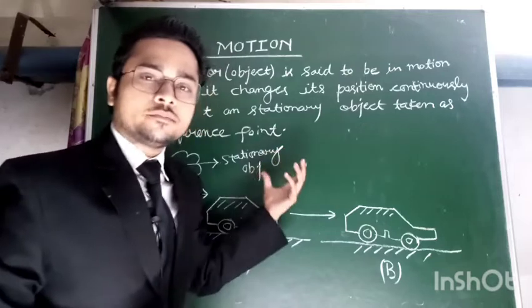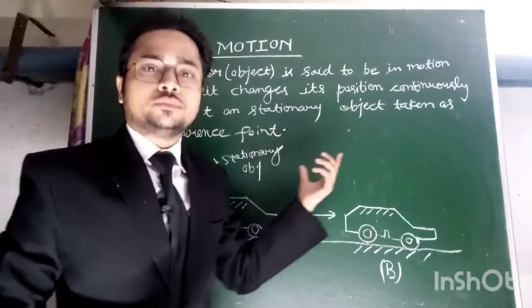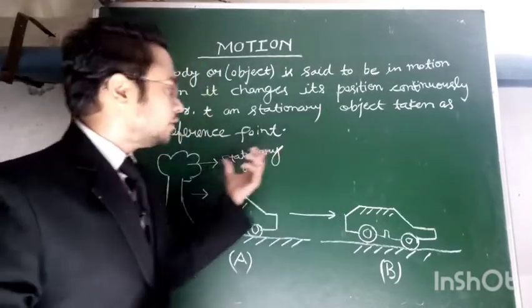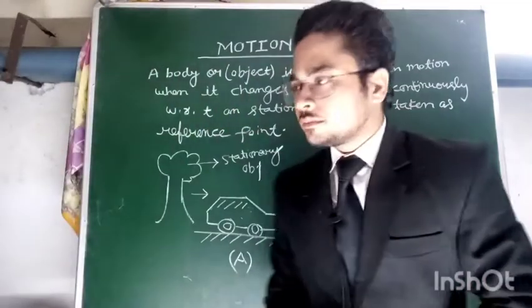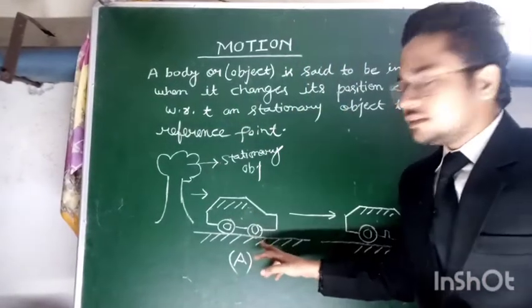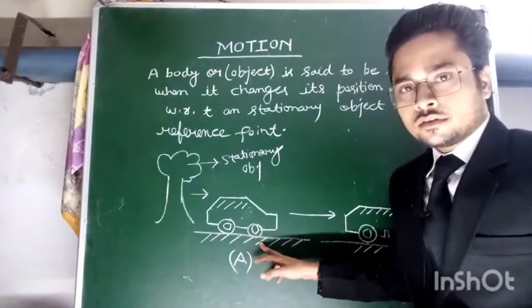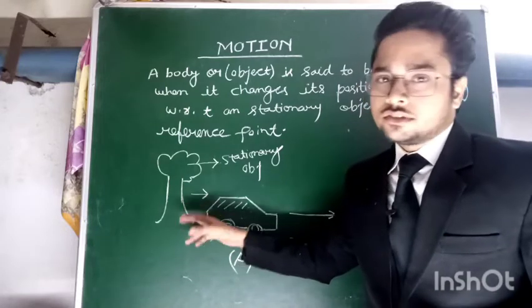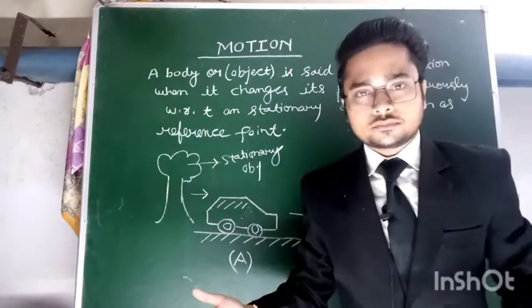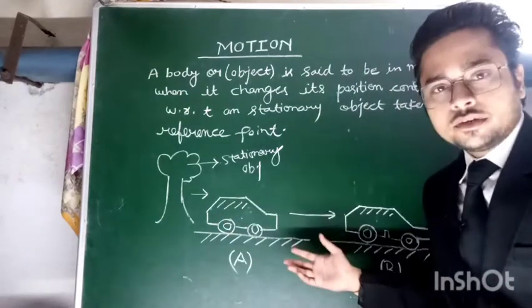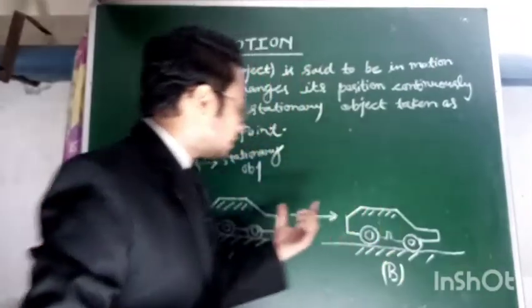It changes position continuously with respect to a stationary object taken as a reference point. Let us suppose a car is standing near a tree, which is a stationary object. After five minutes, we see that the car is now at position B.